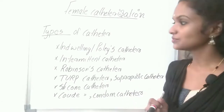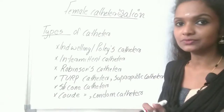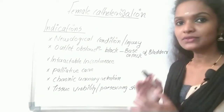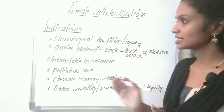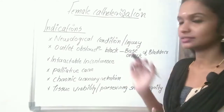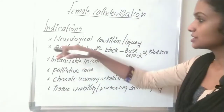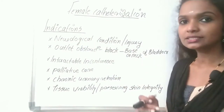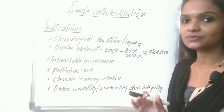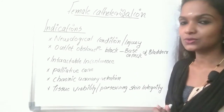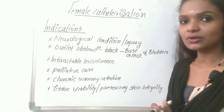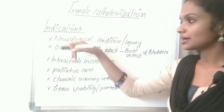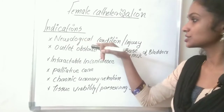According to the use of catheterization, we will use any one of the catheters as per the physician's order. The first indication is neurological conditions or neurological injury. When there is a neurological problem, impulses will not pass from the bladder to the brain, so the control of urination cannot occur. Catheterization can be done for patients under neurological conditions.